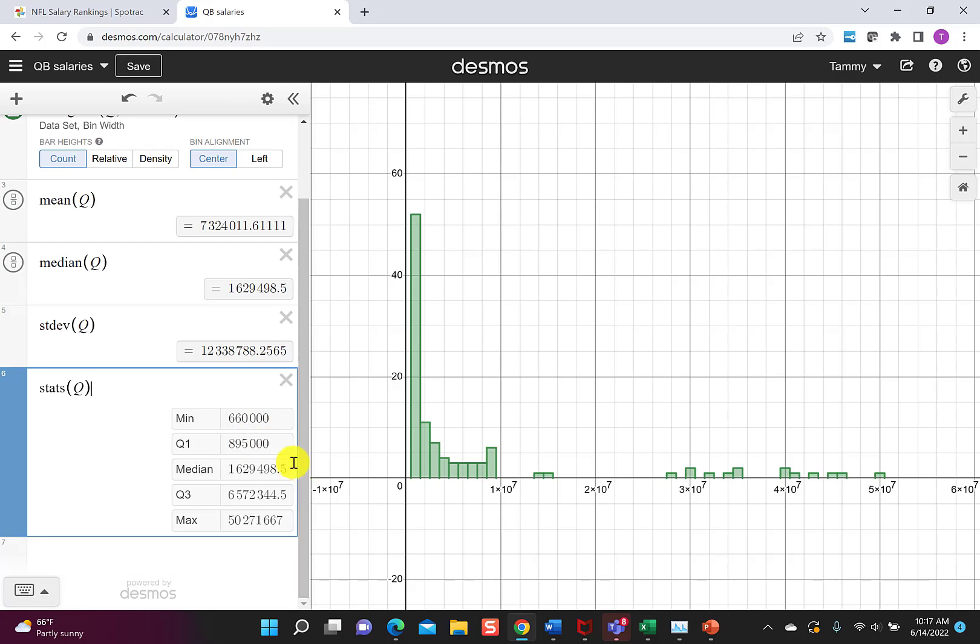The first quarter, so this $895,000, which is the quartile one, tells me 25% of the players make between $660,000 and $895,000. We already had the median, but also tells me another 25% make between $895,000 and this $1.6 million.